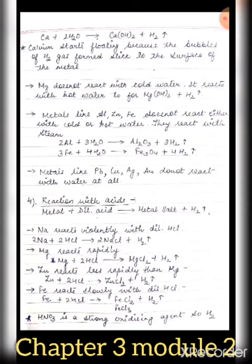Copper, mercury, silver, and gold do not react with dilute hydrochloric acid or sulphuric acid, as they are noble or less reactive metals.